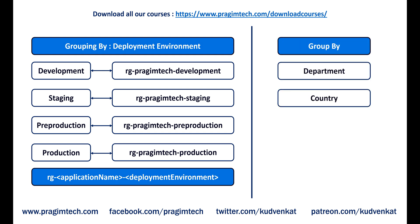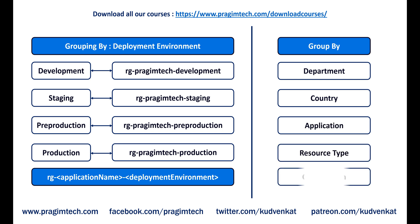You can group by department, by country, by application, by resource type, or a combination of these — any way that makes sense to your organization. In general, resources that share the same deployment lifecycle are grouped together so they can be easily provisioned, deployed, updated, and deleted as a single unit.